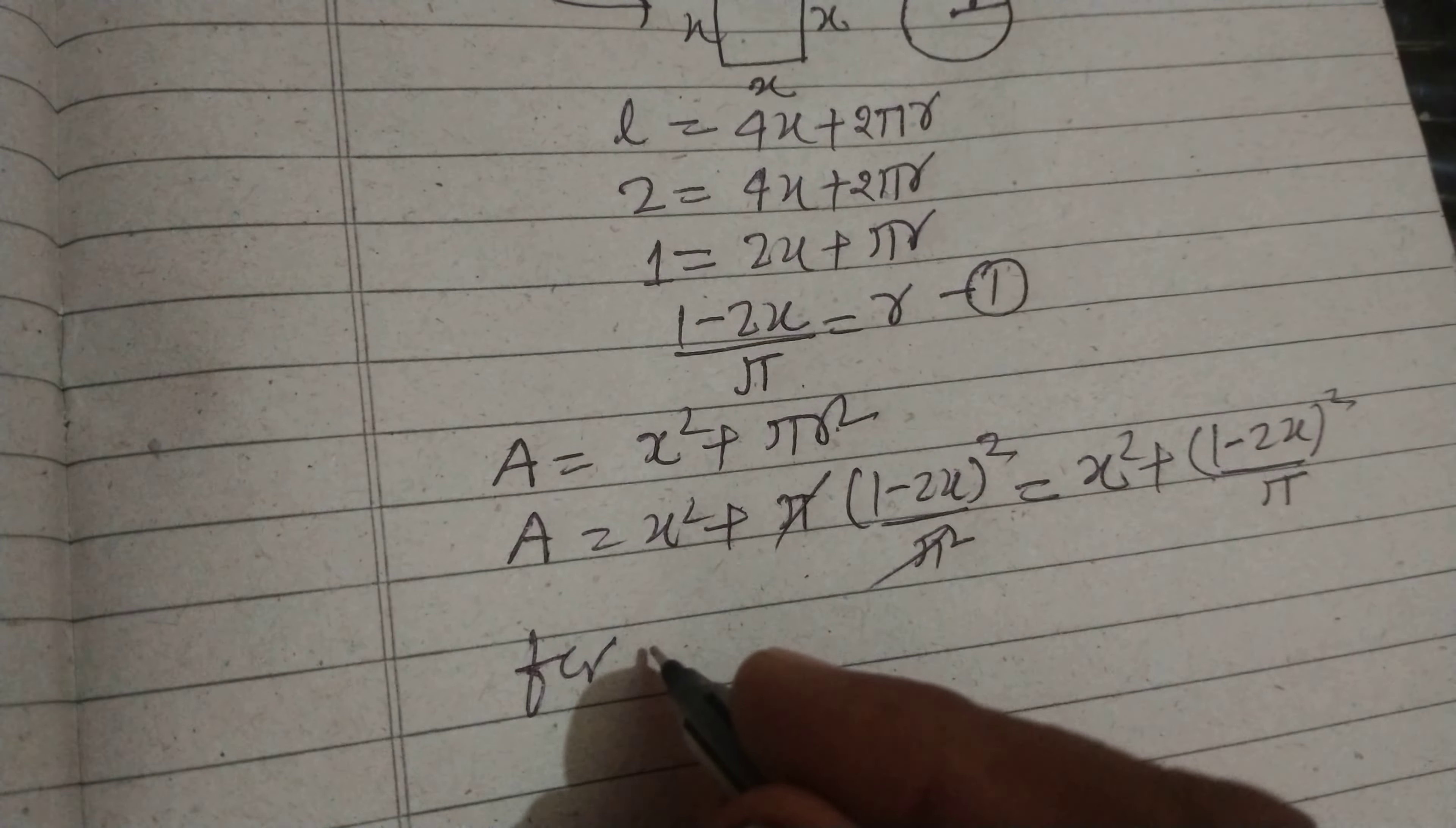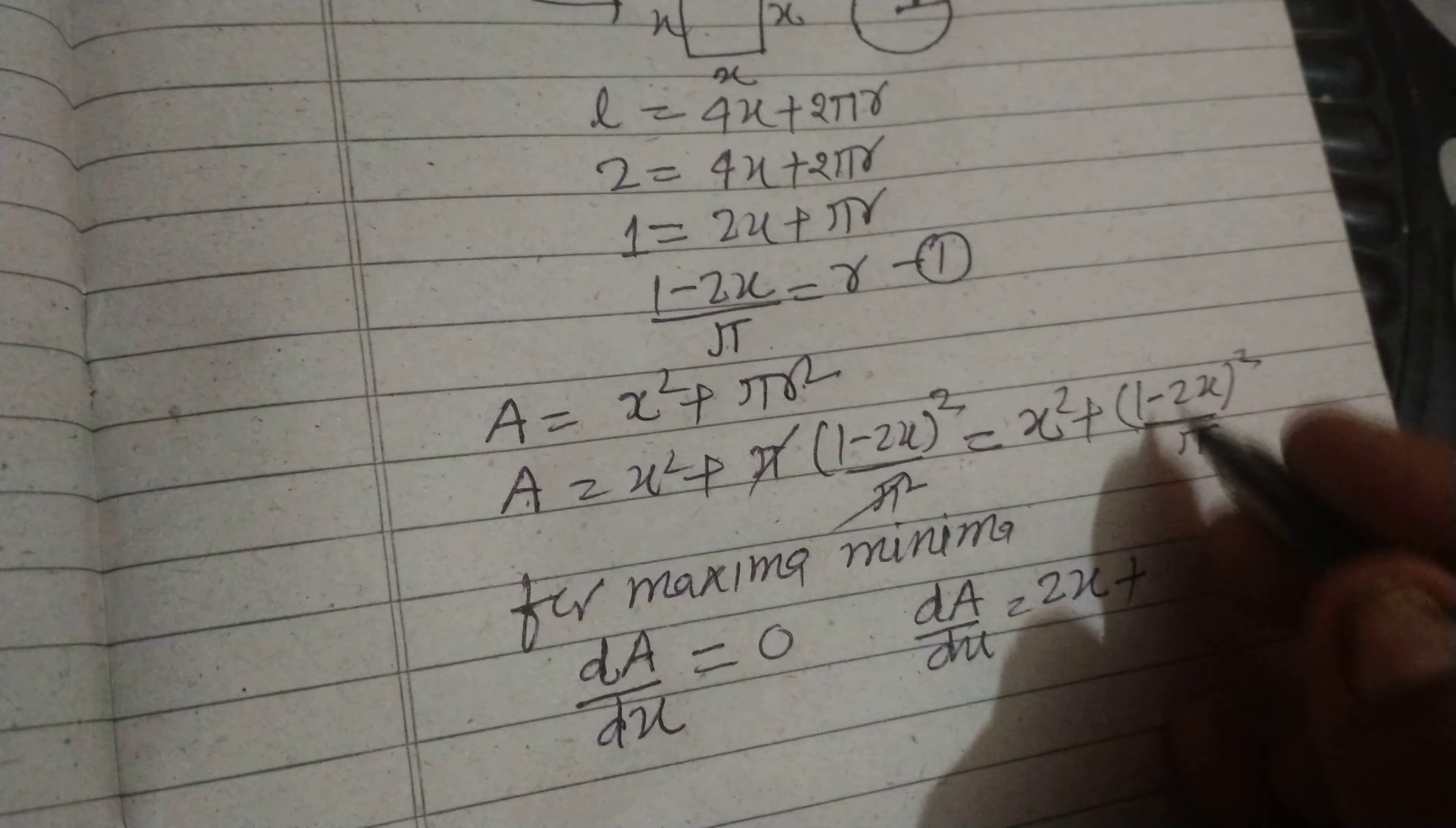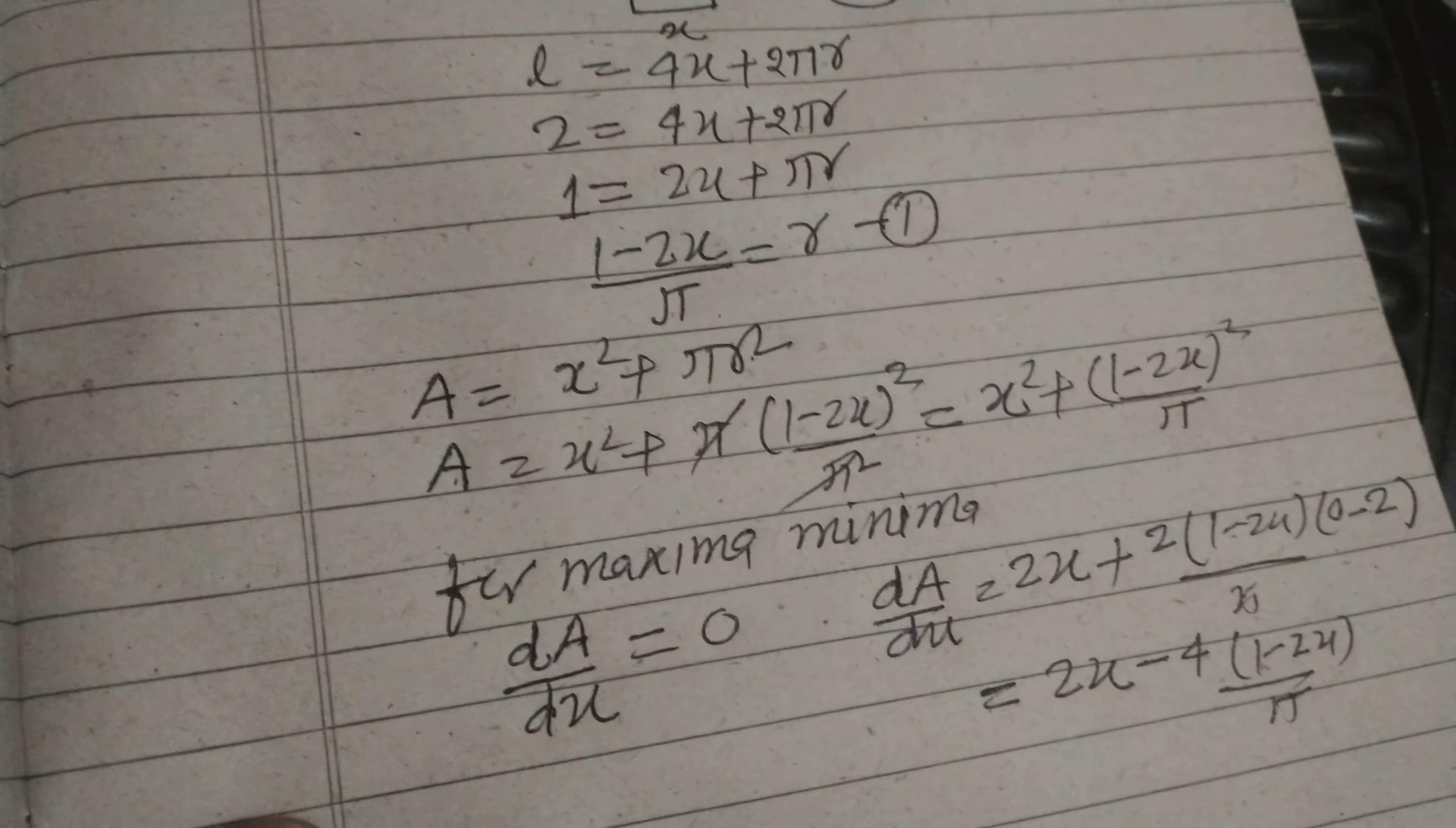Now for maxima and minima, you know that dA/dx = 0. So first we differentiate it: dA/dx, x² is 2x by using the power rule, plus 2(1 - 2x)/π times (-2). So this will be 2x - 4(1 - 2x)/π.